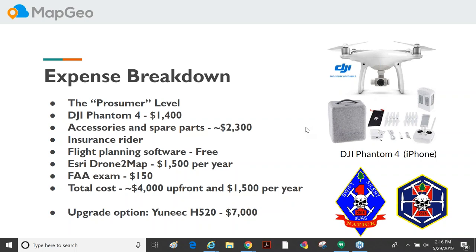We also purchased a Yuneec H520 last spring — a hexacopter with six motors instead of four, able to swap out different camera payloads including a telephoto lens, wide-angle lens, and a small thermal camera. That was about seven thousand dollars all in. From there the prices go up incrementally — you can easily spend twenty, fifty, or a hundred thousand dollars on these systems.